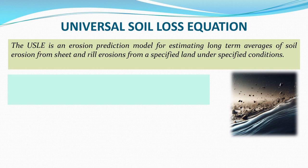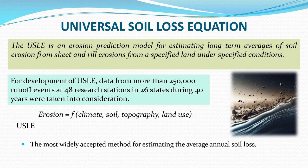It may predict the erosion per year — for example, how many tons of soil could be lost per hectare from sheet and rill erosion for a specific land under specific conditions. For development of this equation, data from more than 50,000 runoff events at 48 different research stations across 26 states over 40 years were considered. A lot of work was done to form this equation by Wischmeier and Smith.